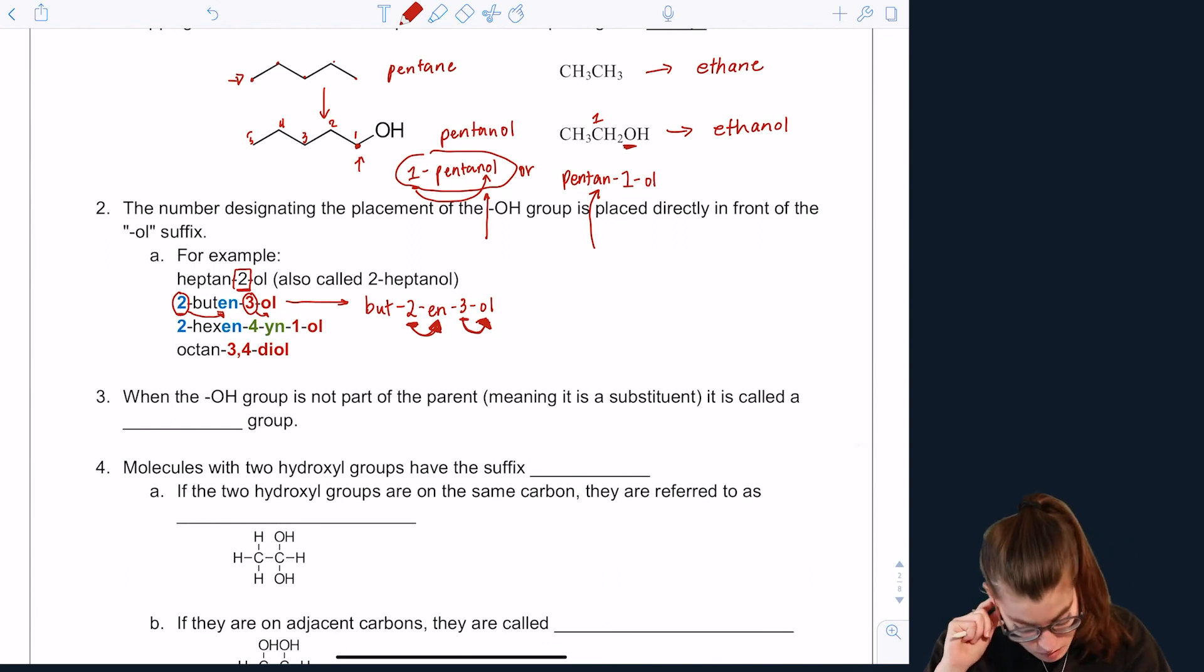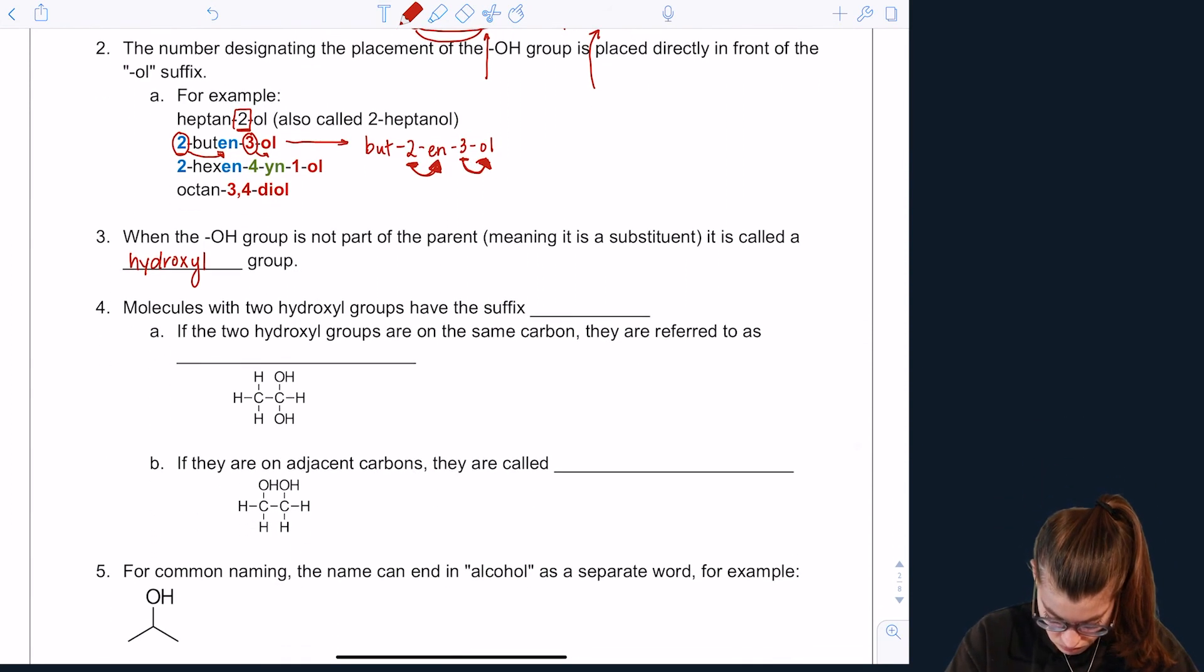So when the OH group is not part of the parent, meaning it's a substituent, it's called a hydroxyl group. A molecule with two hydroxyl groups have the suffix called diol. They can also be called glycols. In biology class sometimes you'll hear about glycols. And so that's kind of a more common name.